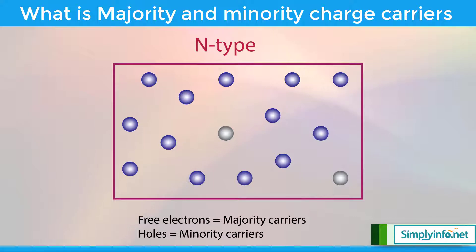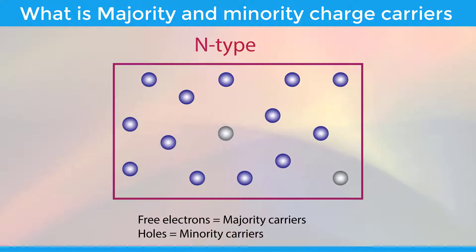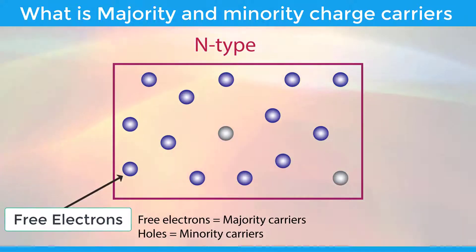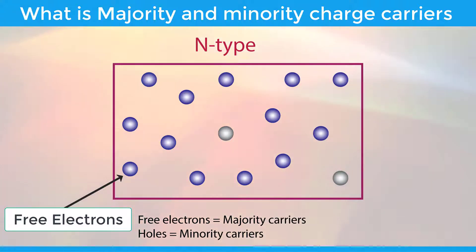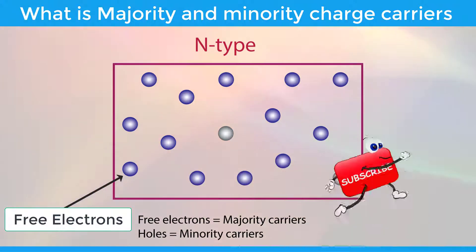Majority and minority charge carriers in N-type semiconductor: when pentavalent atoms such as phosphorous or arsenic are added to the intrinsic semiconductor, an N-type semiconductor is formed. In an N-type semiconductor, a large number of free electrons is present. Hence, free electrons are the majority charge carriers, and they carry most of the electric charge or electric current in the N-type semiconductor.